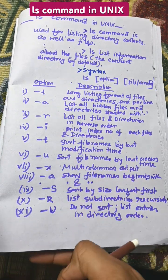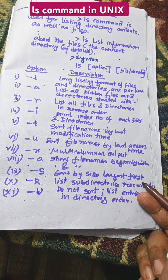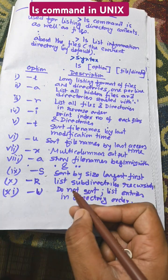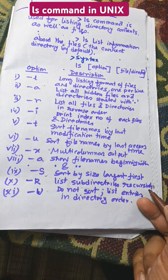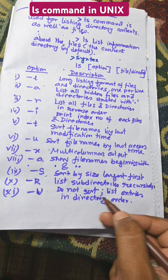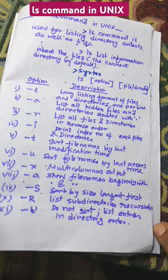ls hyphen capital S sorts by size, largest first. ls hyphen capital R lists subdirectories recursively. ls hyphen capital U does not sort, lists entries in directory order.